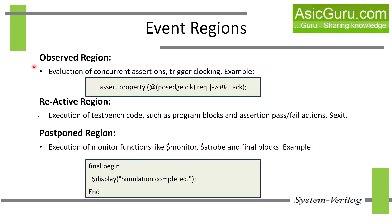Next is the observed region. It evaluates concurrent assertions using the values which were sampled in the prepone region. After evaluating assertions, there would be some pass or fail actions. Processes associated with the pass or fail actions would be scheduled in the reactive region.